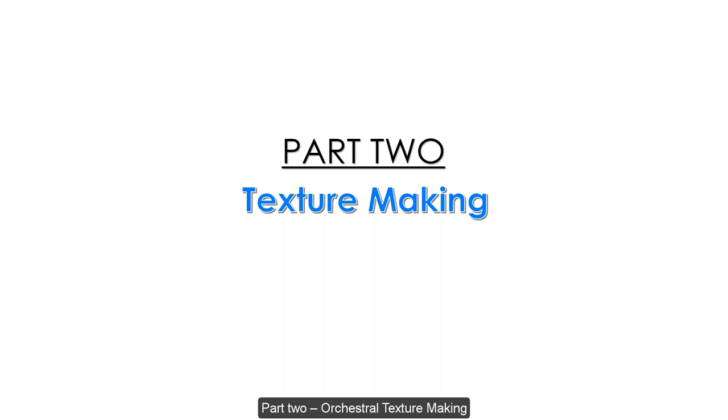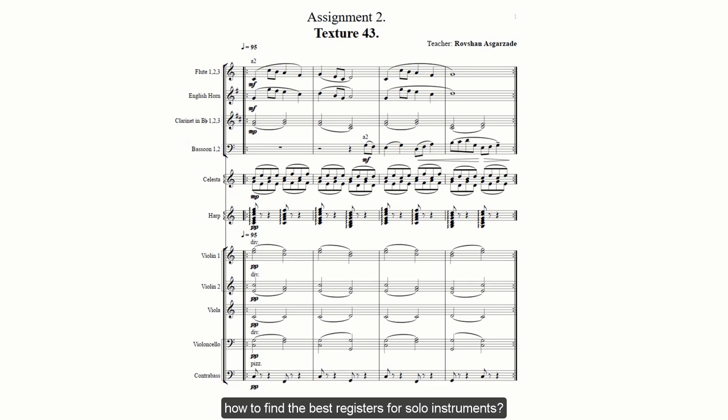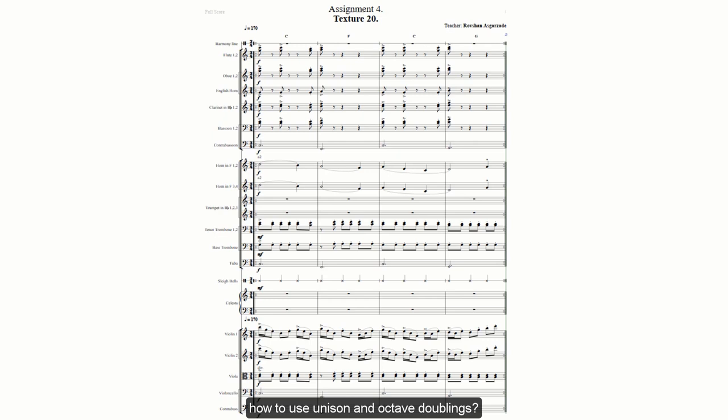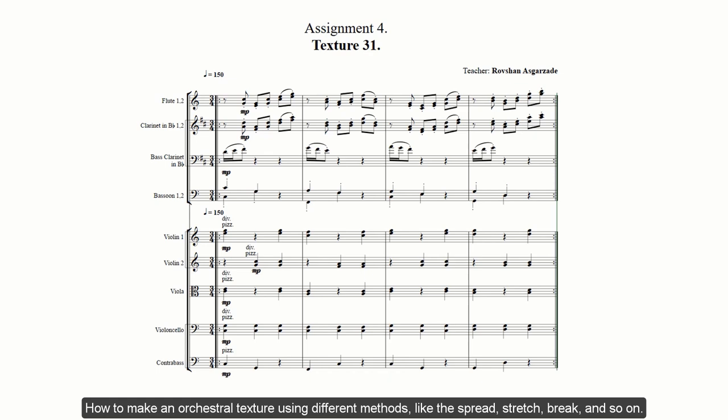Part 2, Orchestral Texture Making. This part will include lectures about how to find the best registers for solo instruments, how to use unison and octave doublings, how to apply warm, cold, and hot device to your melody, how to make an orchestral texture using different methods like the spread, stretch, break, and so on.